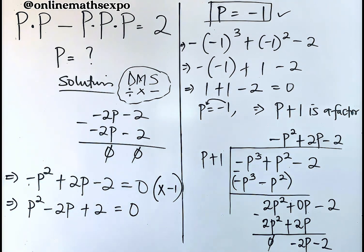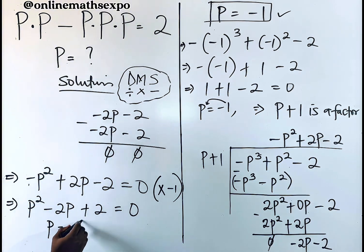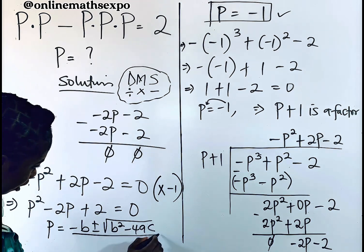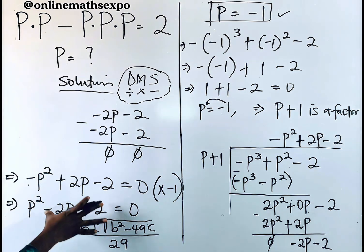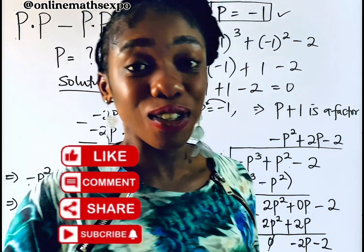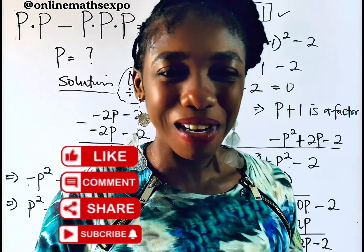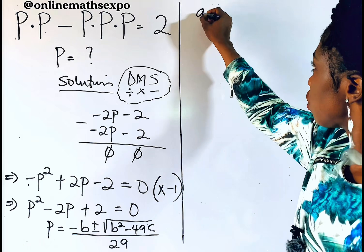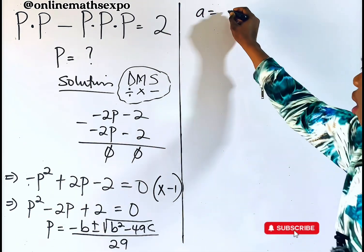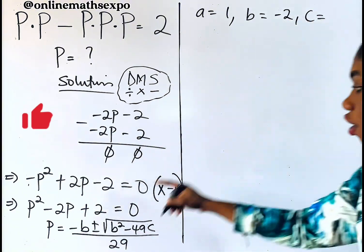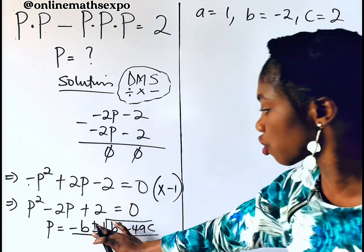We use the quadratic formula: p = (−b ± √(b² − 4ac)) / 2a. Here a is the coefficient of p², b is the coefficient of p, and c is the constant. So a = 1, b = −2, and c = 2. Don't forget to like this video! Let's continue and plug these into the formula.